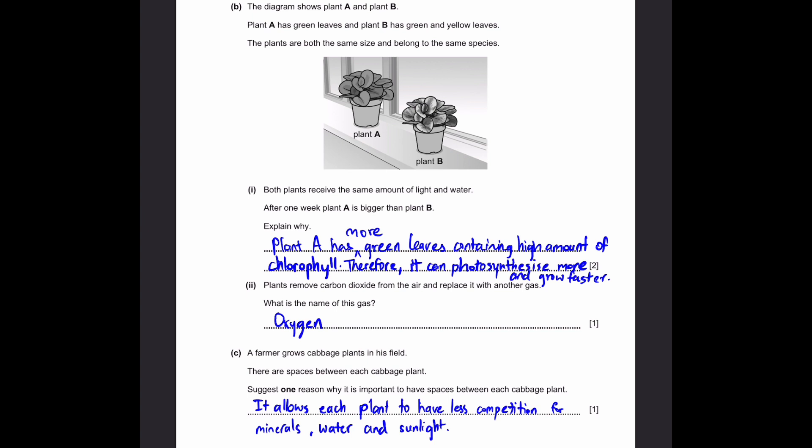Part 2: Plants remove carbon dioxide from the air and replace it with another gas. What's the name of this gas? Of course, it's oxygen. Photosynthesis is carbon dioxide plus water taking in and using sunlight to create glucose plus oxygen. Part C: A farmer grows cabbage plants in his field. There are spaces between each cabbage plant. Suggest one reason why it's important to have spaces. The answer is it allows each plant to have less competition for minerals, water, and sunlight. If you don't write something like competition, you probably won't get the mark. That's the keyword which gives the one mark.